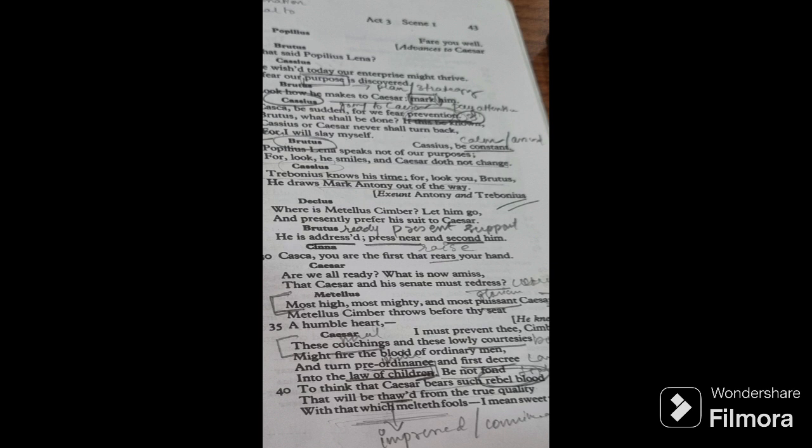Metellus, most high, most mighty and most patient, glorious Caesar. Metellus Cimber throws before thy seat a humble heart. So what is he doing? He's actually trying to flatter Caesar. He's actually trying to be extravagant in his flattery, in his praise towards Caesar, a humble heart. He kneels down. But before he could complete, what does Caesar say? I must prevent thee. I must stop thee Cimber. These couchings, these kneeling downs, these lowly courtesies, these bows might fire the blood of ordinary men. Ordinary men might get convinced by it. Ordinary men might get swayed by it and turn pre-ordinance, pre-ordinance laws and rules and first decree, decree law and turn laws and rules into law of children. They may take it lightly. They may turn it into game of children.